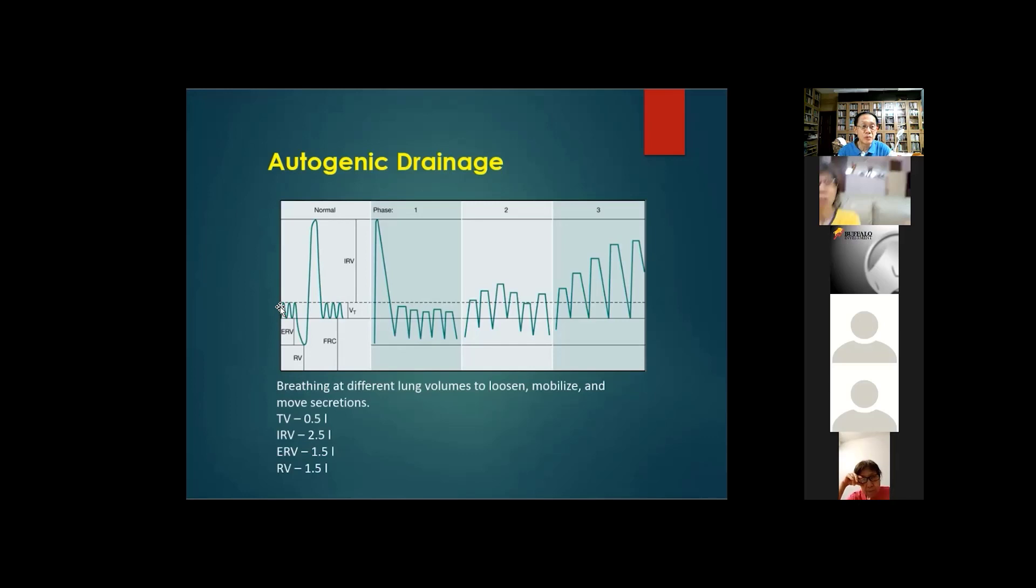Now we try again. So we breathe quietly now. Let go all the air. Now take a very deep breath. You go right up to the top. Your lungs are fully filled. You are in inspiratory reserve volume. You try again, quiet breathing now. Slowly breathe in and out. Completely expel all the air. Now take a very deep breath until you cannot breathe in anymore. You would have reached your inspiratory reserve volume. Now go back to tidal volume, quiet breathing now.